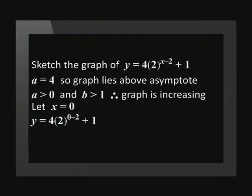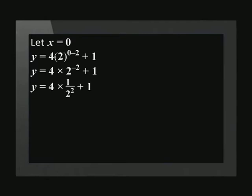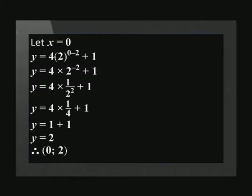For step 3, we are looking for the y-intercept, and we begin by substituting x with 0. This results in y equals 4 times 2 to the power of negative 2 plus 1. Using the laws of exponents, we can rewrite 2 to the power of negative 2, which gives us y equals 4 times 1 over 2 to the power of positive 2 plus 1. This becomes y equals 4 times 1 over 4 plus 1, which simplifies to 1 plus 1, meaning y is equal to 2. The y-intercept is (0, 2).